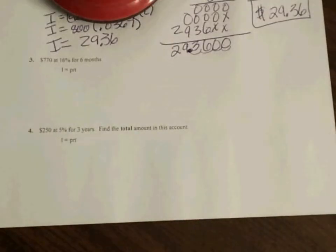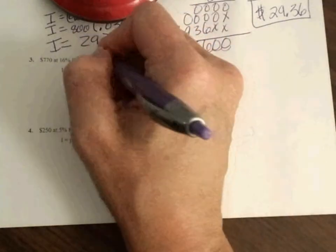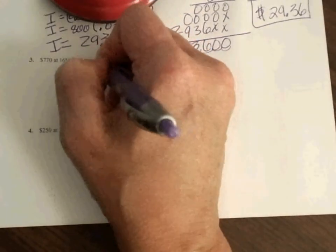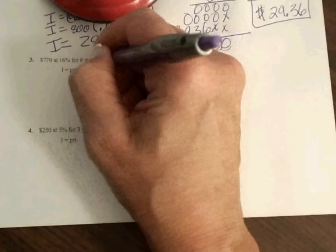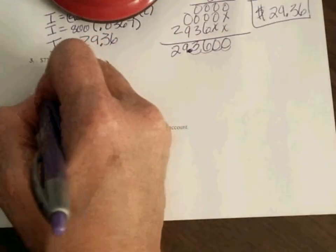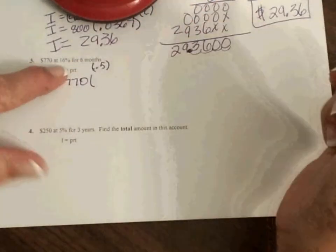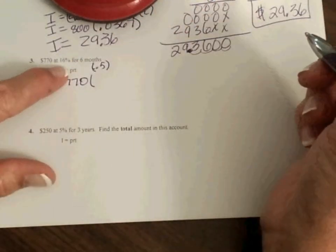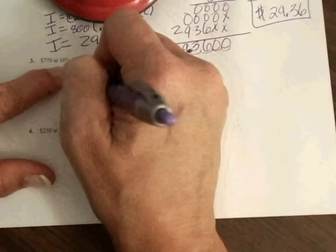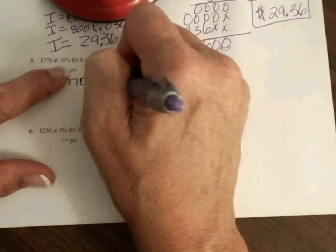Number three, our next example, we have $770 at 16% for six months. So let's talk about the six months. We normally do by the year. And so if it's six months, how much of a year is that? That's going to be half a year, and we know that that is 0.5, is the decimal equivalent for 1 half. So now I'm going to use my formula. My principal is 770. Change this 16% to a decimal. So it's 0.16 times 0.5.